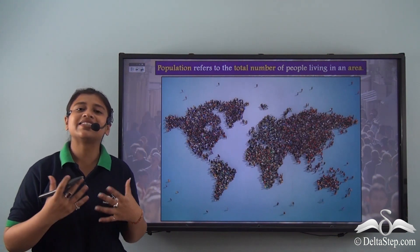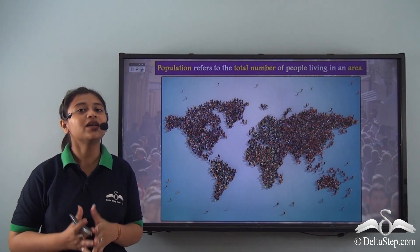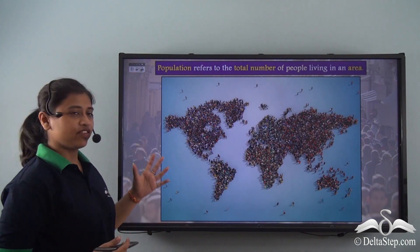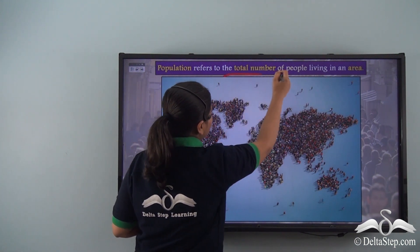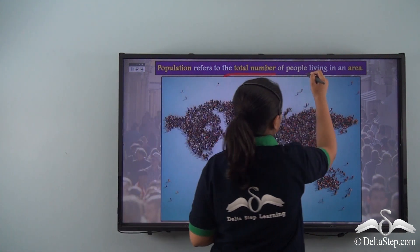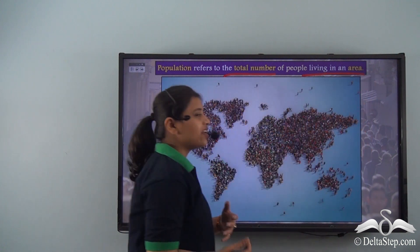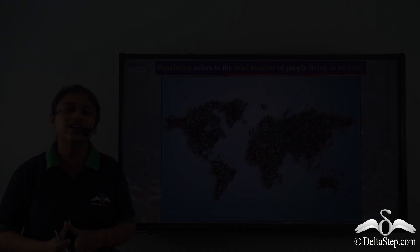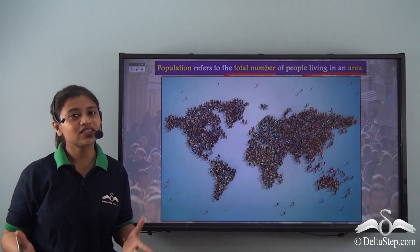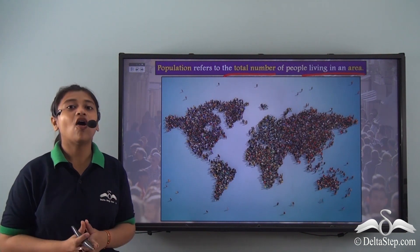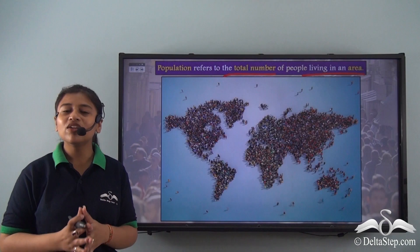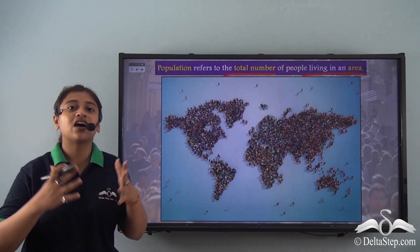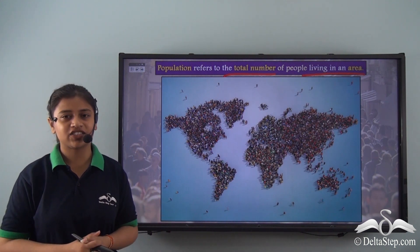Now what exactly do we mean by the word population? Population refers to the total number of people living in an area. This area could be either a small classroom, a concert hall, or on a larger scale it can also refer to the number of people living in a city, a country, or the world at large.